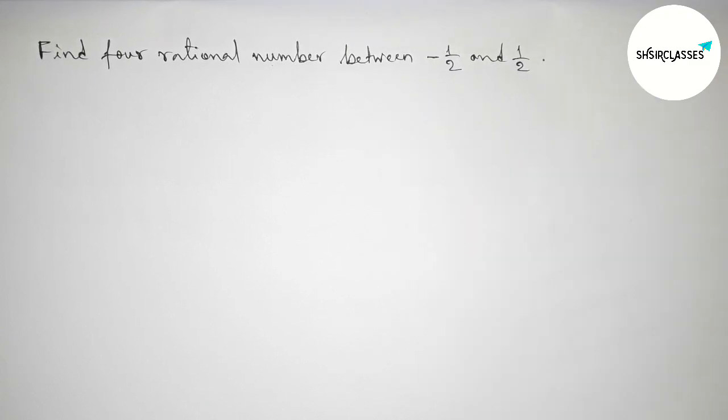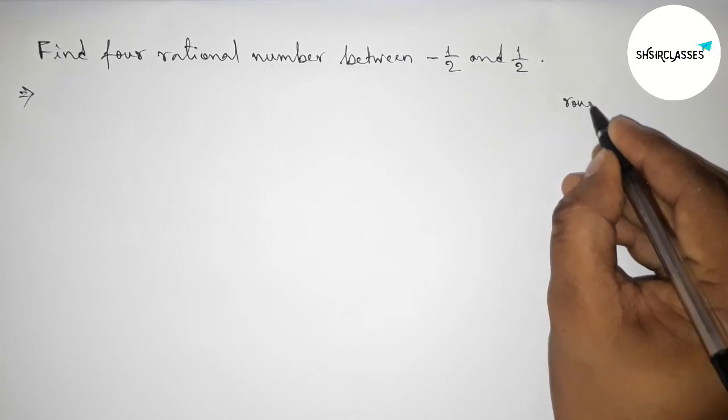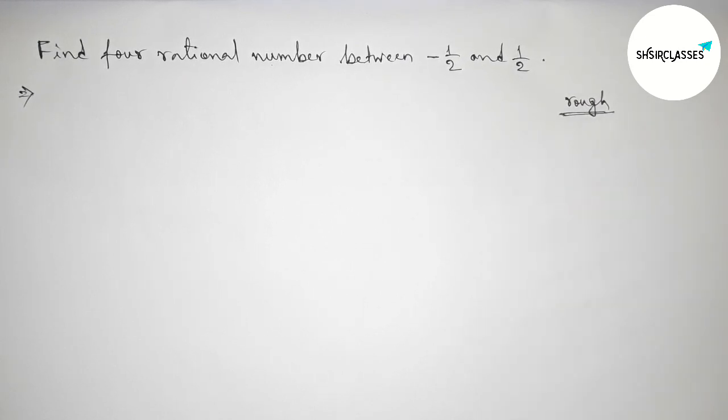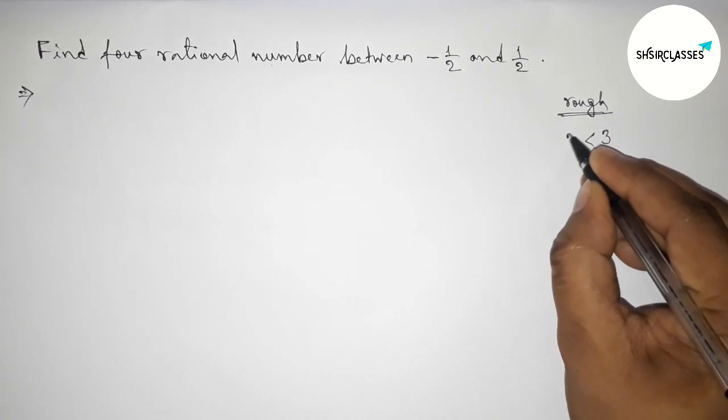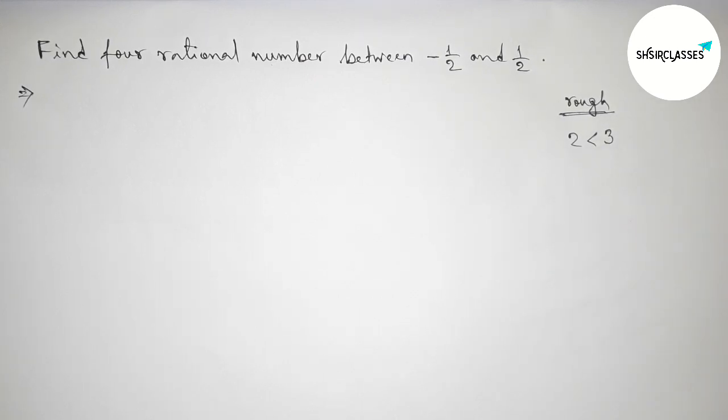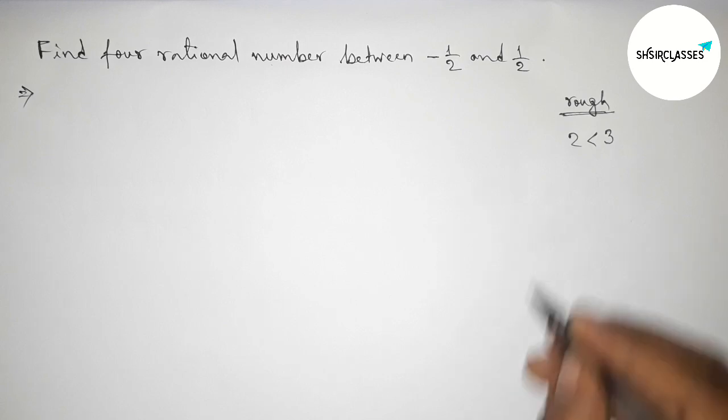First of all, let us solve this problem. Now here, roughly discussing some important calculations. First, taking a number 3, which is greater than 2. If we take the inverse of both numbers, then the inequality symbol will be changed. That is, 1 by 3 less than 1 by 2.